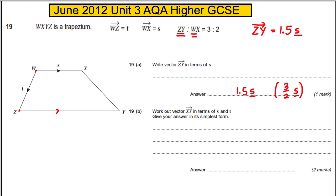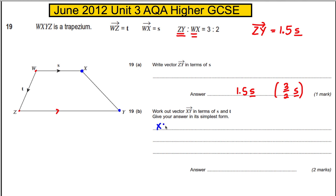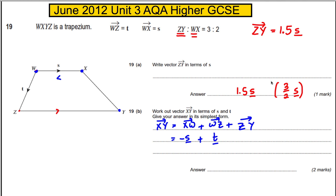Now for the supposedly tricky part: find the vector from X to Y. We go from X to W, then W to Z, then Z to Y. X to W is in the negative direction, so it's negative s. W to Z is in the right direction, so it's plus t. And Z to Y we've already found — that's plus 1.5s.